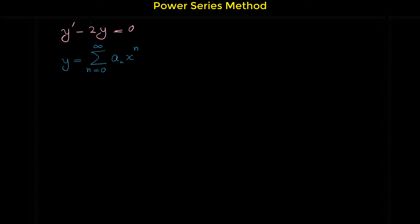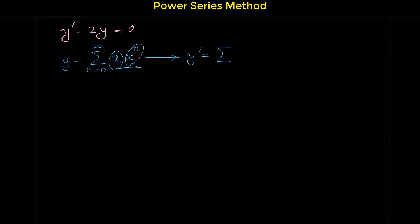Now because in this differential equation we have y prime, we have to take the derivative of this power series. Y prime equals sigma — we have to take the derivative of the general term. Note that a sub n is just a coefficient for x to the n. Using the power rule, derivative of x to the n is n x to the n minus 1, so the derivative of a sub n x to the n is n a sub n x to the power of n minus 1.